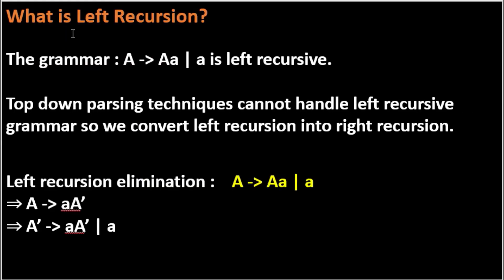The next question is: what is left recursion? Suppose we are given a grammar: A → Aa | a. By looking at this grammar, we check the LHS — we have capital A — and then we look at the RHS productions. On the RHS, the leftmost symbol of the production is also capital A, which is the same as the LHS. This means the grammar contains left recursion, and we need to eliminate it.